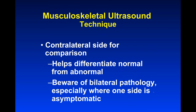One very useful aspect of MSK ultrasound is that you always have the contralateral side for comparison. If you're doing an MRI of an ankle, you generally do not scan the other ankle. But there's a lot of variability in the MSK system, so it's very nice to pick up the probe and look at the other side. This helps differentiate normal from abnormal, though you have to be aware of bilateral pathology — somebody may have a rotator cuff tear on one side and an equal-size tear on the other side that doesn't hurt. It tends to be most helpful when it's asymmetric, increasing your confidence that what you're looking at is in fact an abnormality.